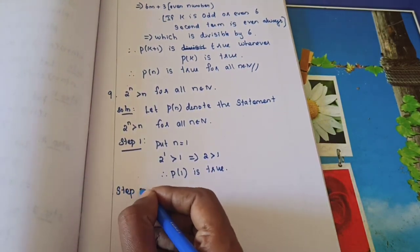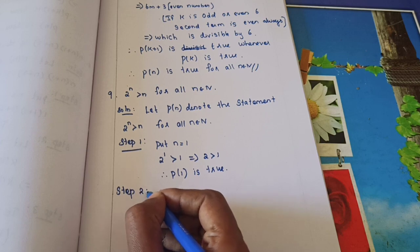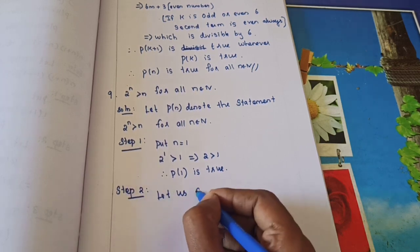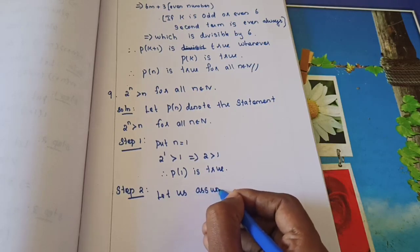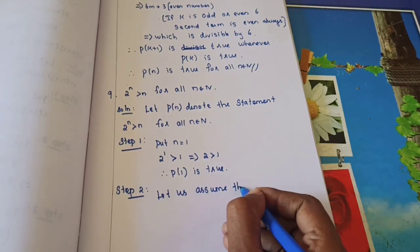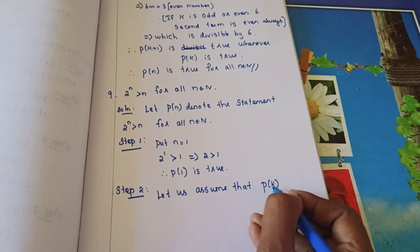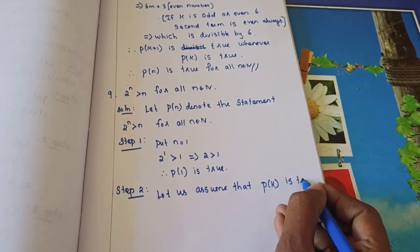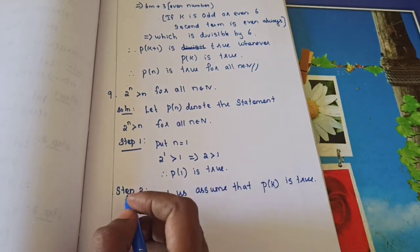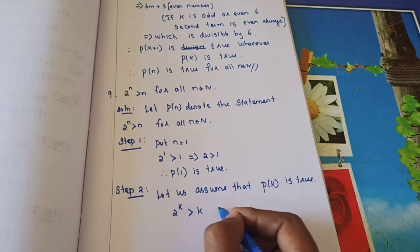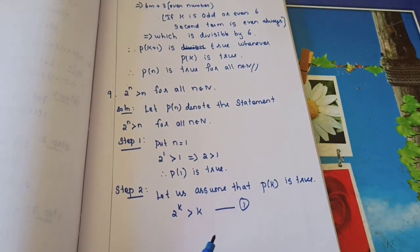Step 2: Let us assume that p(k) is true. So 2ᵏ is greater than k. Take this as equation number 1.